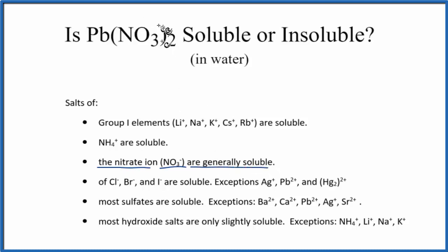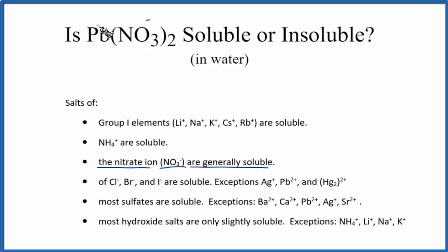So lead 2 nitrate will be soluble. Note that nitrate, NO₃, has a negative charge — a 1 minus charge — and we have two of those. So in order to balance that 2 minus out, this has to be Pb²⁺. That's why we're calling this lead 2 nitrate. So lead 2 nitrate is soluble in water according to our rules.